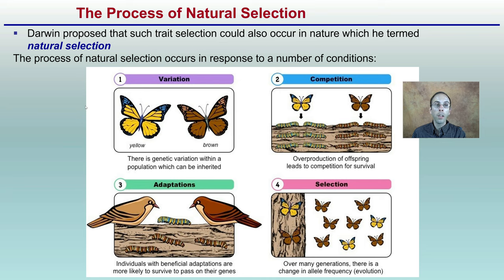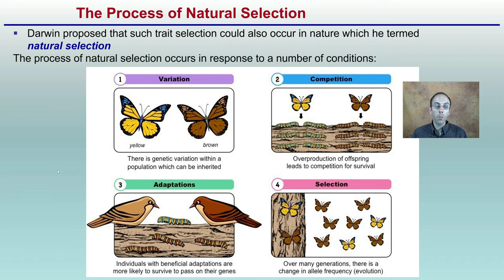The process of natural selection — trait selection can occur in nature, which Darwin termed the natural selective process, and this occurs in response to a number of conditions. There could be simple variation in color within a population that's inherited — bright yellow or dark brown. There could be competition, where overproduction of offspring leads to competition for survival. This leads to adaptations where individuals with beneficial adaptations are more likely to survive and pass on their genes. Over many generations, there is a change in allele frequency, leading to the concept of evolution.